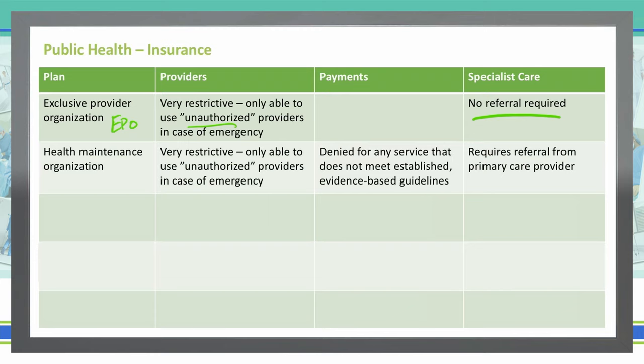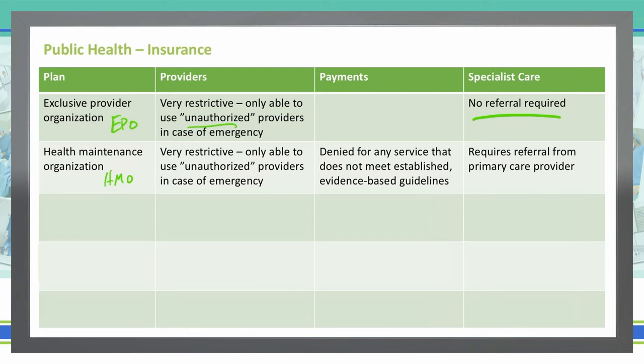Health Maintenance Organizations — you've probably heard this called an HMO. HMOs are similar to EPOs in a few areas and different in a couple others. They are basically a health insurance plan that limits coverage to a particular network that includes doctors, hospitals, and other healthcare providers. Insurance will not cover the cost if you go to an outside provider, so you want to always choose an HMO plan that is usable in your area or with your preferred physicians.